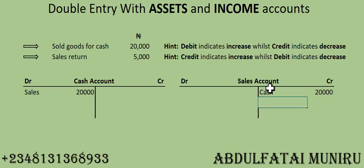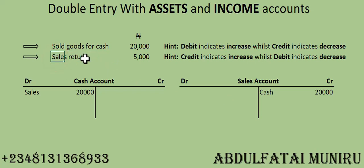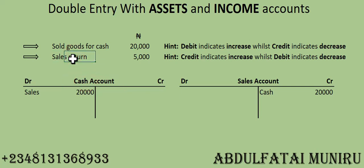With this, we understand that a debit posting to an asset account indicates increase, and a credit posting to an income account also indicates increase. But what if there is a sales return? If the customer returns the goods — due to bad quality, damage, or expired product — you give back the money and receive back what you sold. In this case, cash will decrease and sales will also decrease. The two accounts still affected are cash account and sales account.